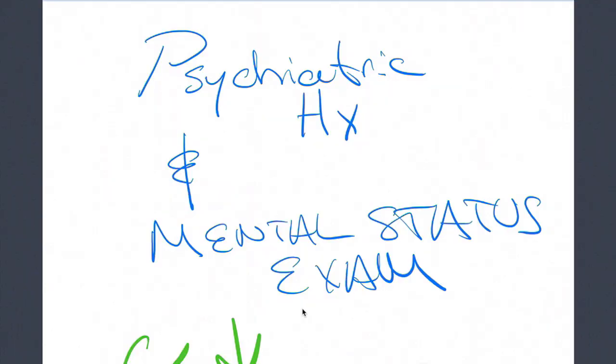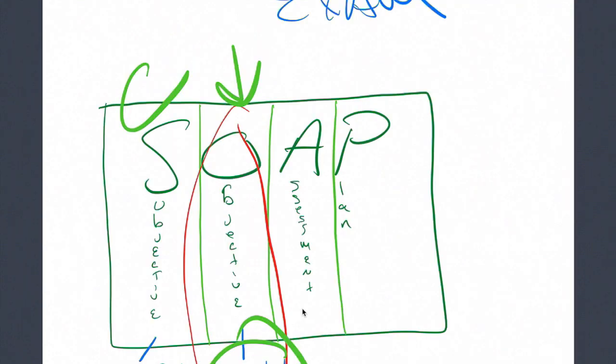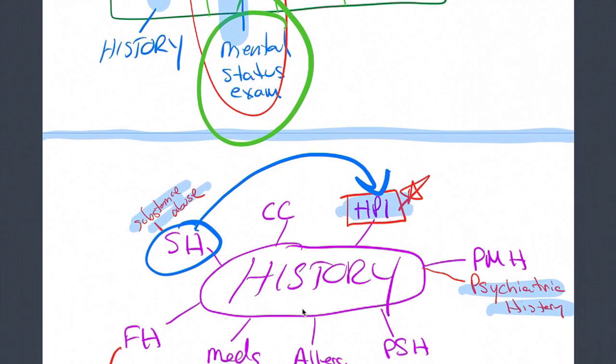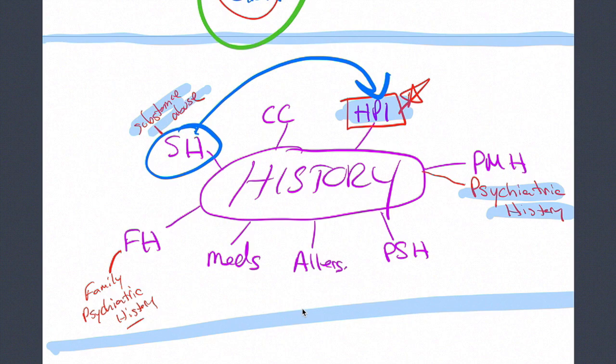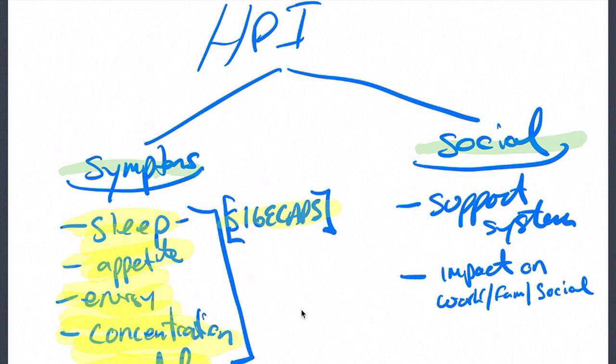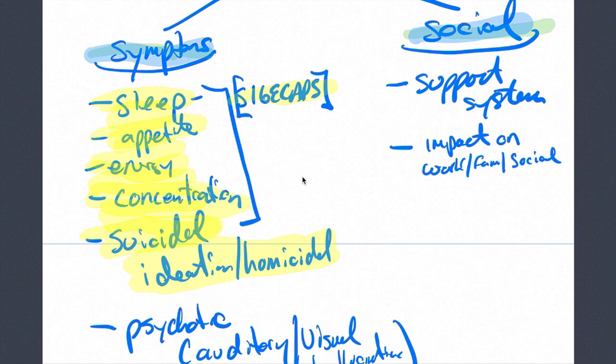Let's do a quick recap. First, we talked about how the history is part of the subjective part of the exam, and the mental status exam was part of the objective part of the exam. The history included all of these aspects. Some different things for a psychiatric patient were the HPI and a couple of other factors. HPI, a way that I think of it is between social and symptoms, and these are things that can guide your history of present illness.